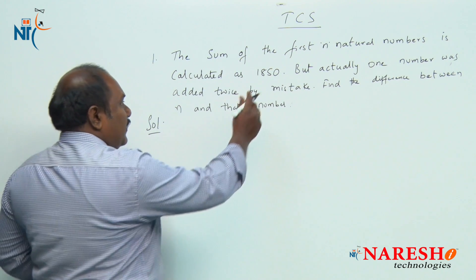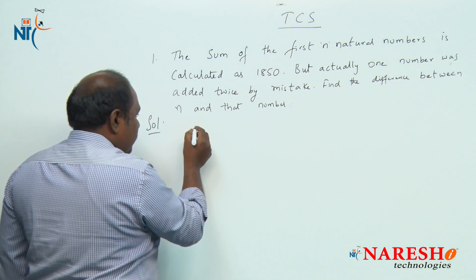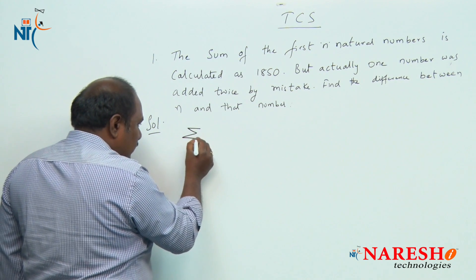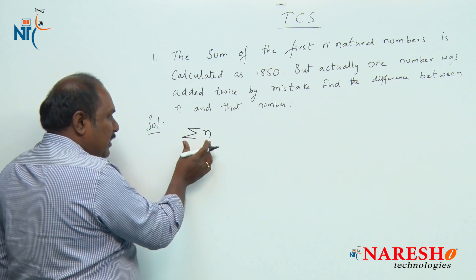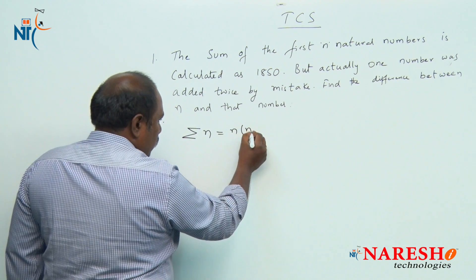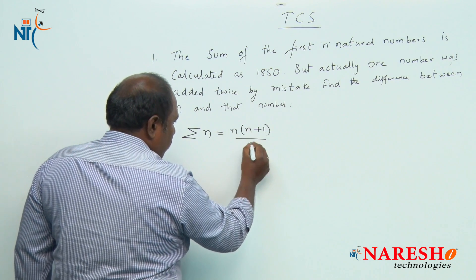What is the formula for the sum of first n natural numbers? The sum of first n natural numbers is generally denoted by sigma n, which is n into n plus 1 by 2.